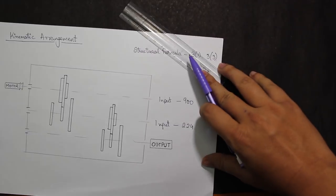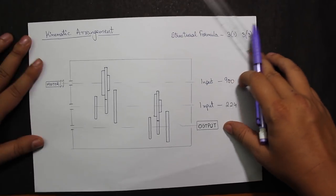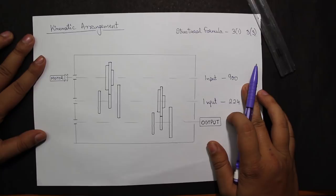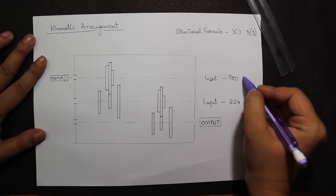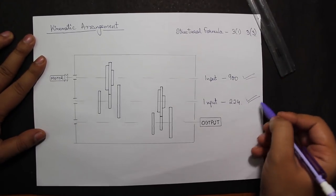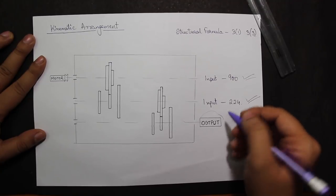Next we will be making the kinematic arrangement of the gearbox obtained. I had two input shafts, that is 900 and 224, and one output shaft, so I'll be drawing three lines over here.